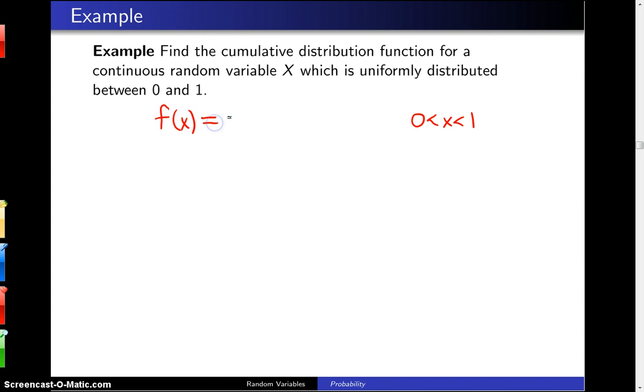And we also know that the only function that will be a constant between there and give a uniformly distributed random variable is f of x equals 1. That function is positive and integrates to 1.